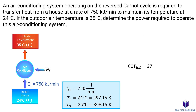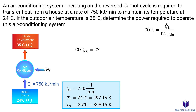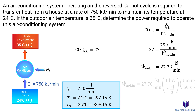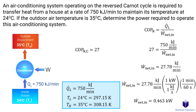Now all we need to do is use the equation relating power usage with COP. Let's plug our values in. Keeping in mind that 1 kW is 1 kJ per second and there are 60 seconds in a minute, we can write this in kW. And that's our answer.